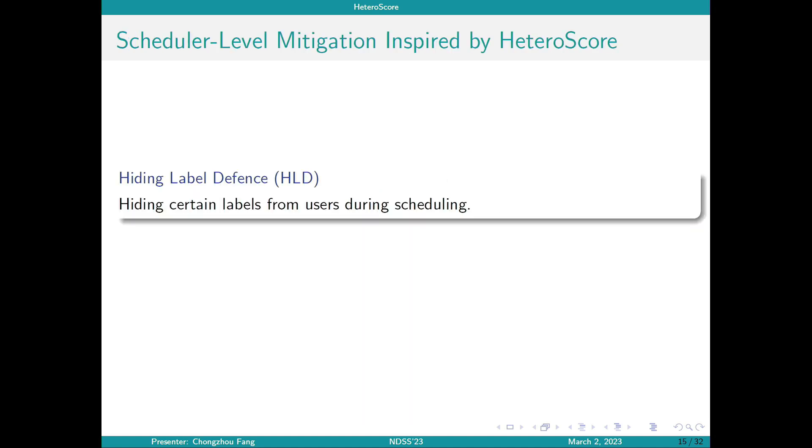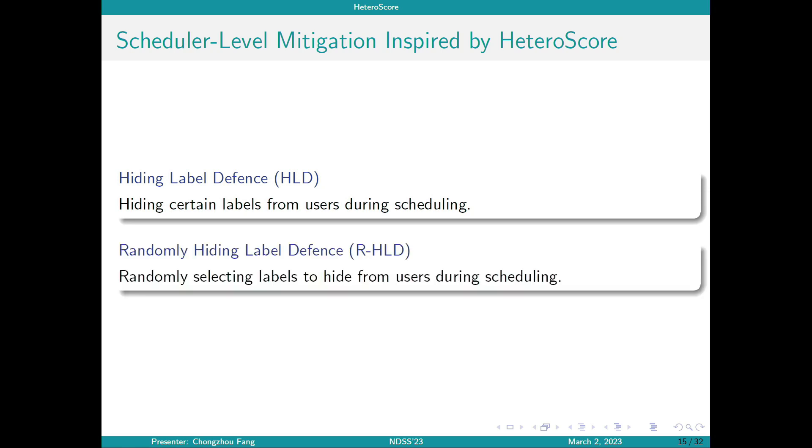So, inspired by the calculation process of heteroscore, we propose two scheduler level mitigation strategies. The key idea here is to reduce the heteroscore seen by users by applying scheduler level changes. The first approach is called hiding level defense, where we decrease heteroscore by making certain labels hidden from users. This will help reduce the dimension of the node space and will hence decrease heteroscore. The second one is called randomly hiding label defense, where during scheduling each instance, the scheduler will randomly select labels to hide from users.